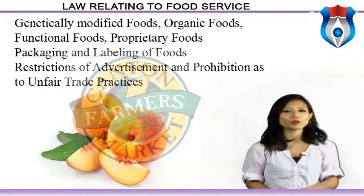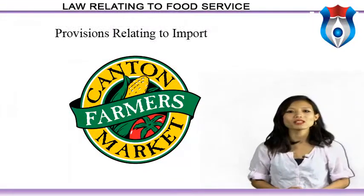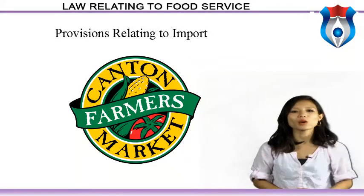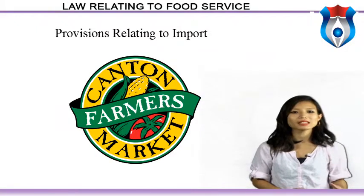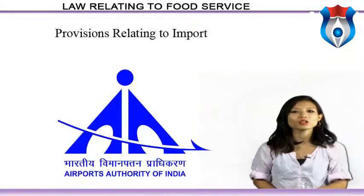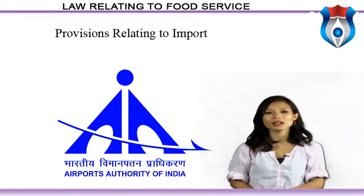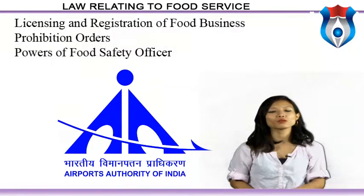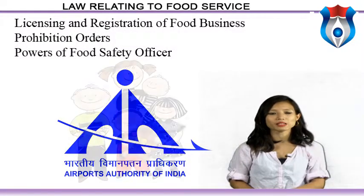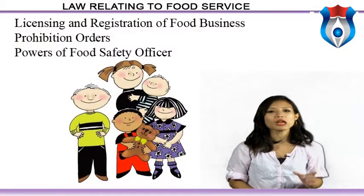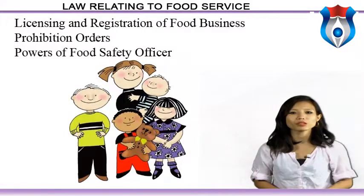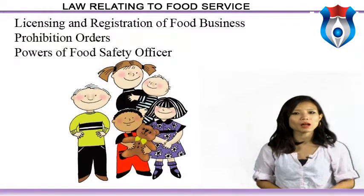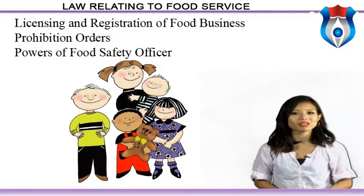Regarding provisions relating to import: no person shall import into India any unsafe, misbranded, substandard food, or food containing extraneous matter, or any article of food for which a license is required under any act, rules or regulations, except in accordance with the conditions of the license. The food authority and state food safety authorities shall be responsible for enforcement of this act. The state government shall appoint the Commissioner of Food Safety for the state. The act also covers licensing and registration of food businesses, prohibition orders, and powers of food safety officers.